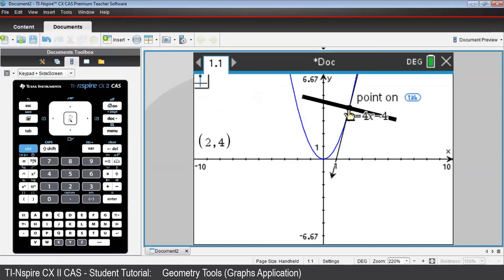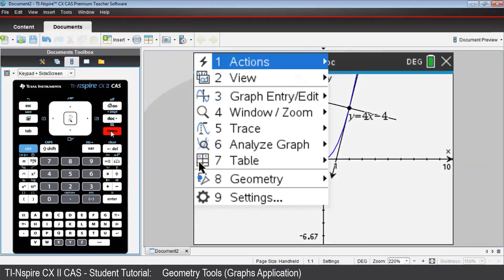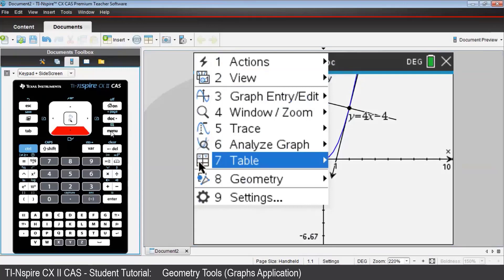Extend the ends of this line. They won't be arrows, as done before, making sure the left end passes through the parabola again. To find where this perpendicular intersects with the parabola again, from the menu, once again select Geometry, then Points and Lines, then Intersection Points.